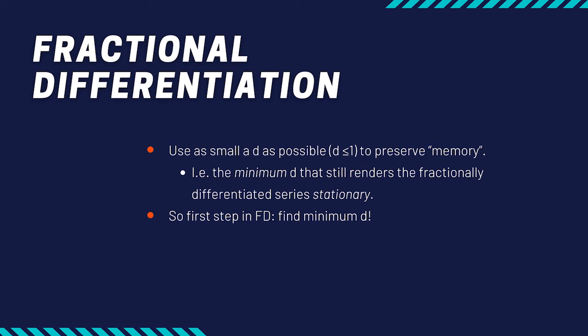As long as the resulting fractionally differentiated price series is stationary, that gives us a way to find a minimum d allowed. You can keep trying a smaller d until at one point the resulting series is no longer stationary, then that doesn't work. The minimum d available that can still make the fractionally differentiated price series stationary is the d we should use.